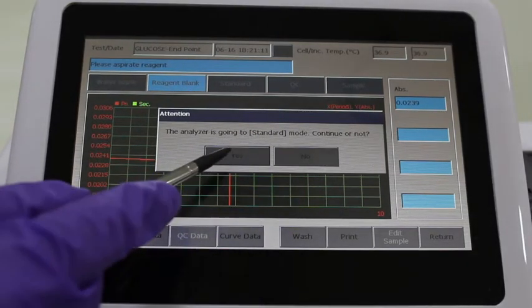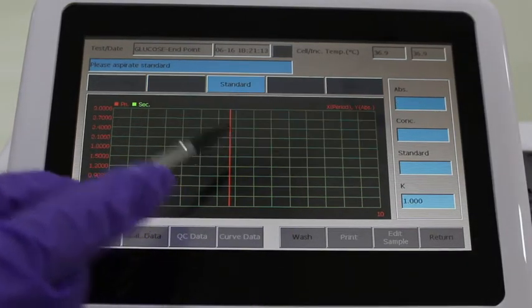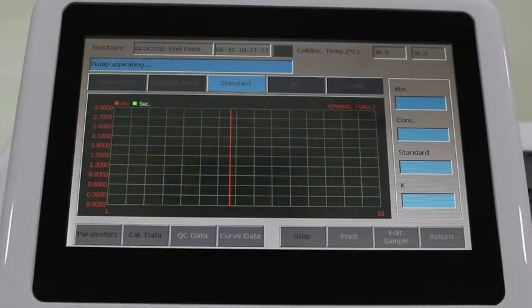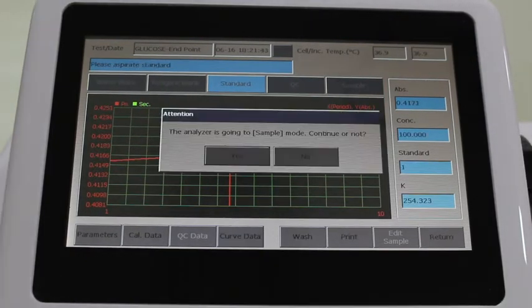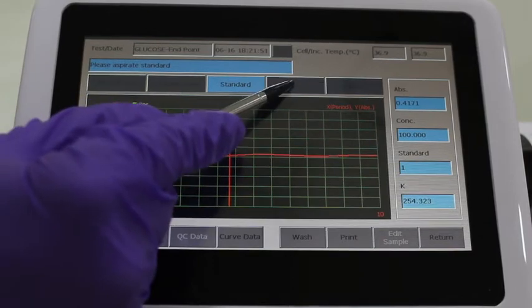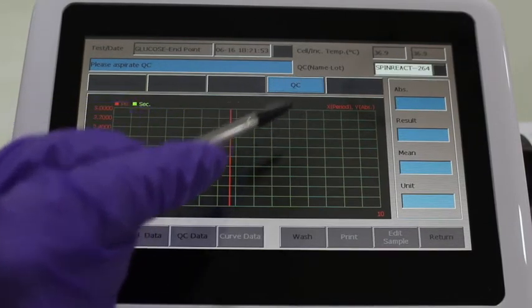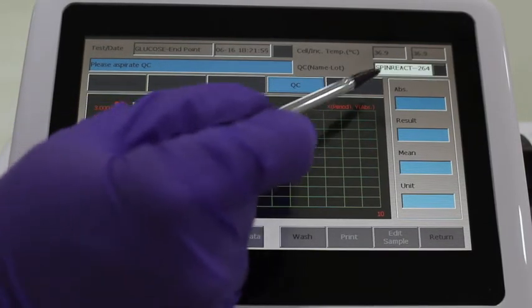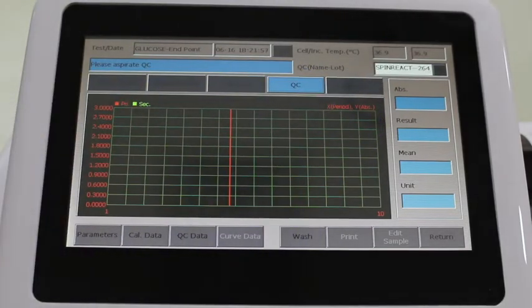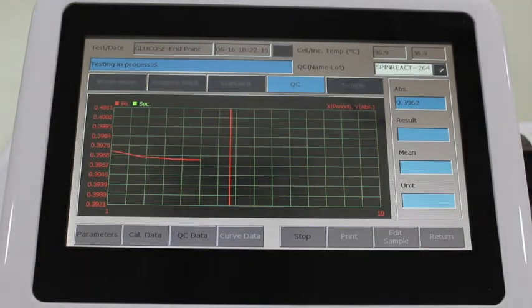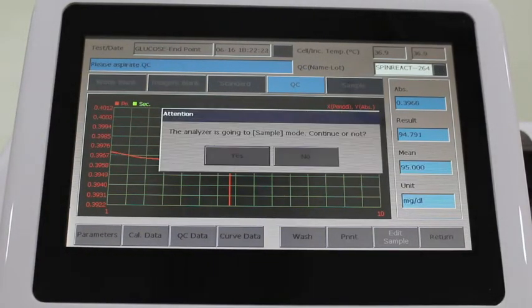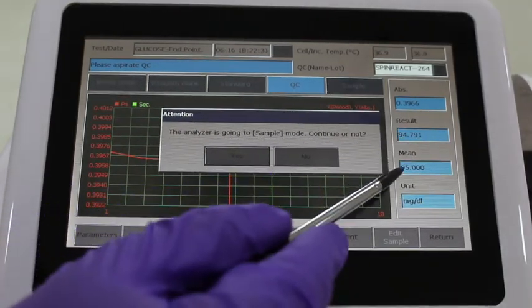Okay the same and aspirate reagent blank. The process repeats and reagent OD is displayed. Now the instrument is ready to run the standard. Once given okay, it will ask to aspirate standard and the standard is run and OD is displayed. QC can be run if required to confirm the performance. QC has to be selected and then aspirated. Values and lot already stored in QC menu. Once QC is okay, you can check the values and then run the samples.